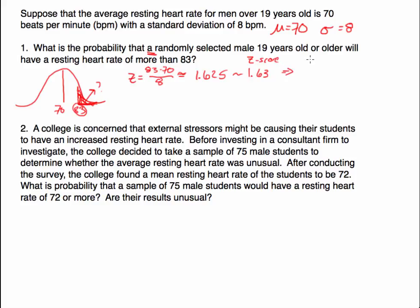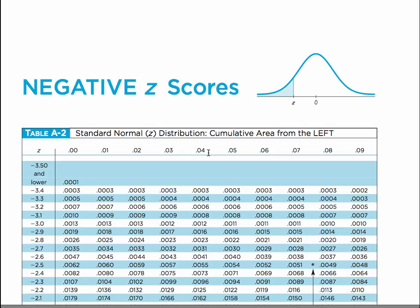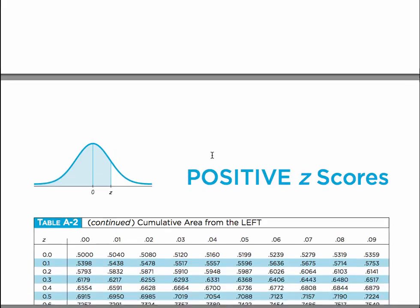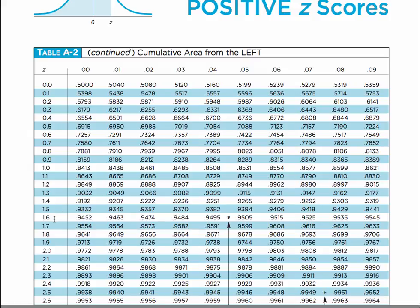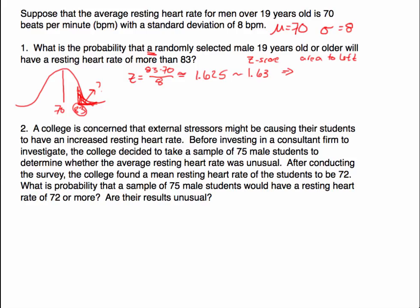If I look up the z-score on the chart I will get the area to the left. Here is 1.6, and I want to go over to the fourth column. So 1.6 in the fourth column gives 0.9484 — that's the area to the left. I'm looking for the area to the right, so I know I have to subtract this from 1.